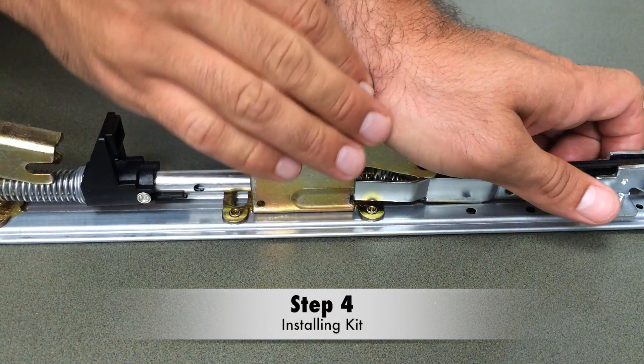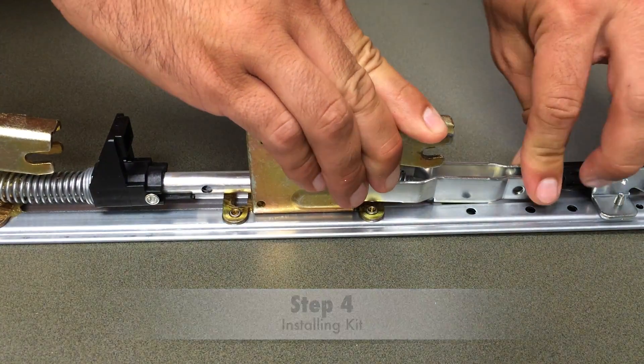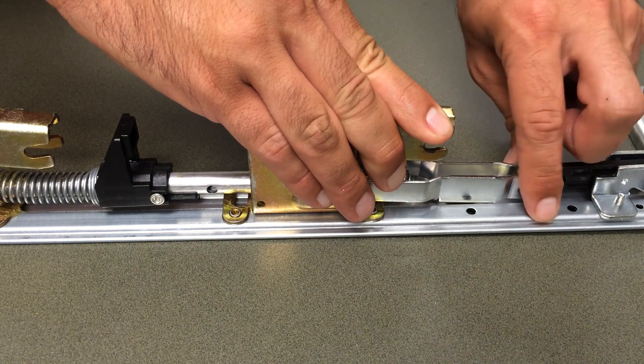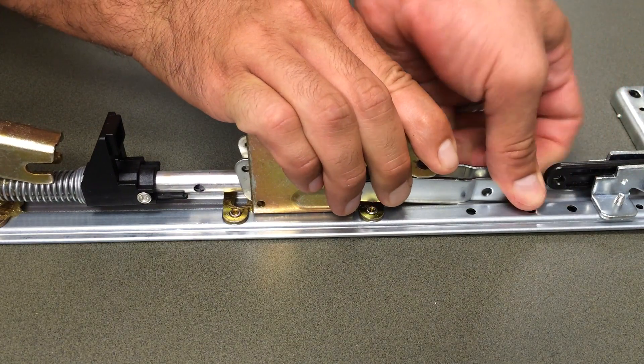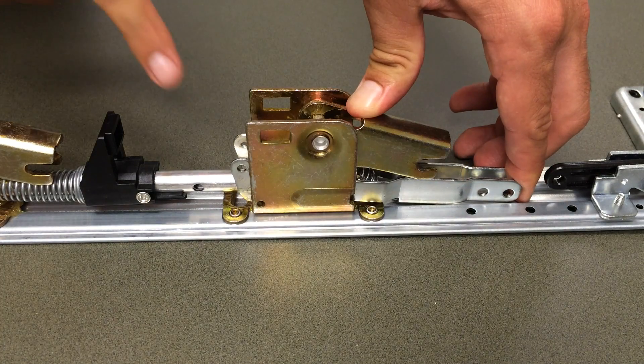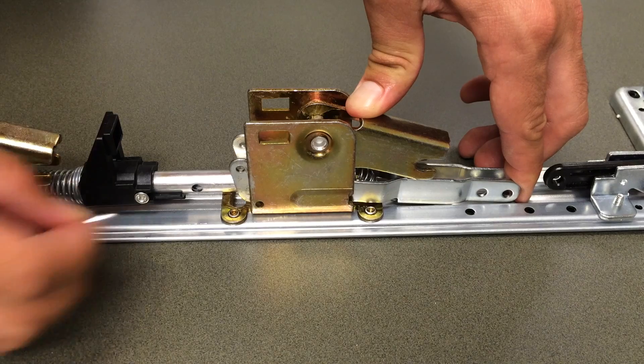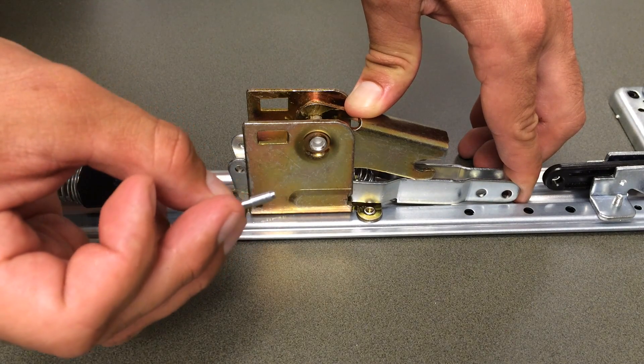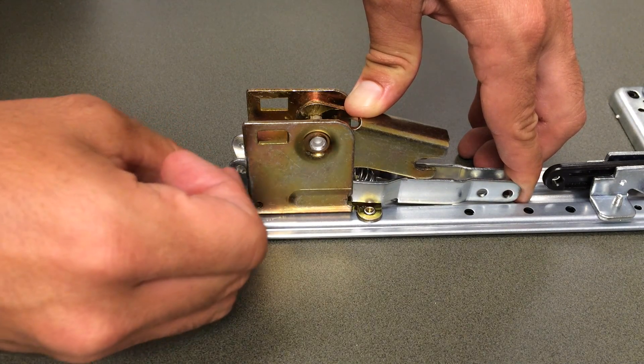Next we're going to be installing the kit. That latch bracket should be attached. You're going to push down the activating arm and slide that back until we see those two holes in the back. We're going to grab our retraction pin. We want the small side to go in first.